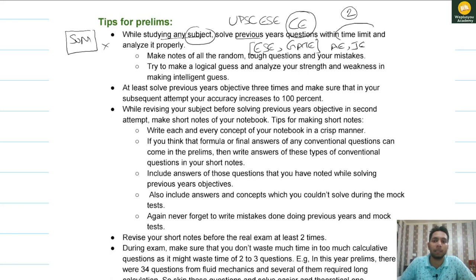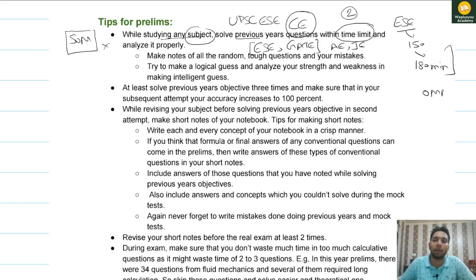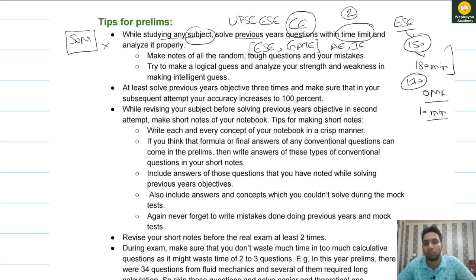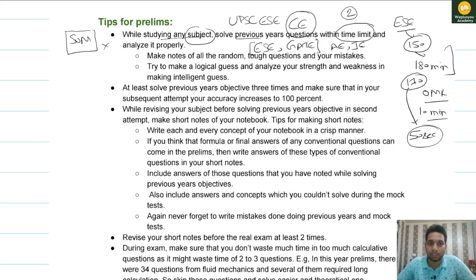You have to solve previous year questions with a time limit, because in ESE your time is very limited. You have to complete 150 questions within 3 hours, that is 180 minutes. Filling 150 OMR bubbles will take around 10 minutes, so you have only about 170 minutes for 150 questions. That means you should not spend more than 50 seconds on any single question. When you attempt previous year questions, set a timer so you know how much time each question is taking.